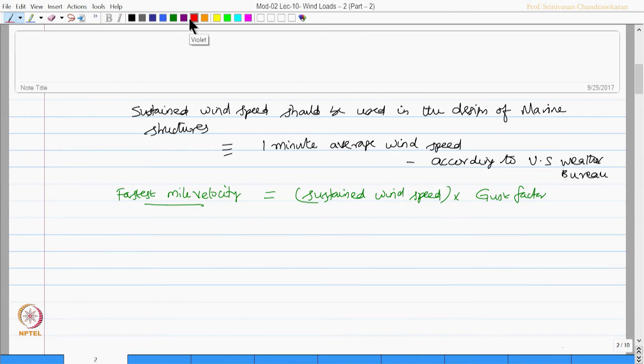Further, a 100 year sustained wind speed of 125 miles per hour. The other term is used for design of offshore structures.